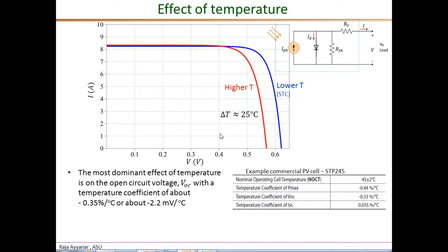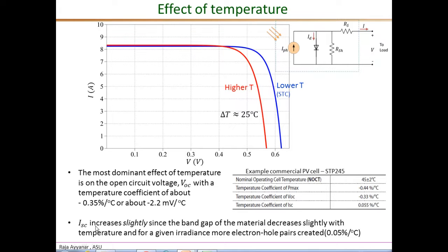Next, we will look at the effect of temperature on the short circuit current. The temperature effect on ISC is that it increases very slightly. The higher temperature increases the short circuit current because the band gap of the material decreases slightly with temperature, and therefore for a given irradiance, more electron-hole pairs are generated at higher temperature, resulting in a slightly higher short circuit current. The increase is only about 0.05% for every degree Celsius rise in temperature, confirmed in this commercial PV module data sheet at 0.055% per degree C. You can see the red curve, corresponding to higher temperature, shows an ever-so-slight rise in short circuit current.